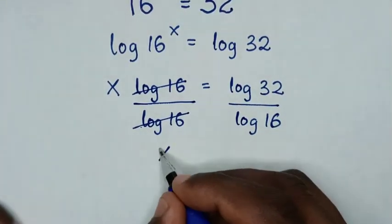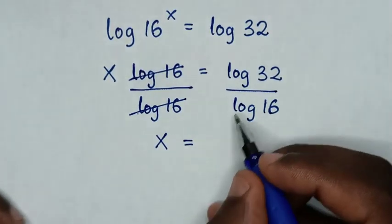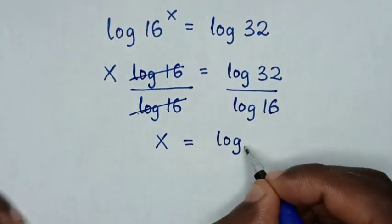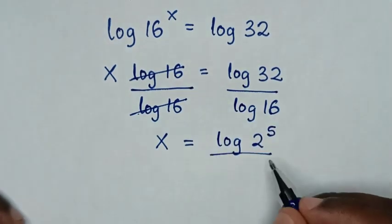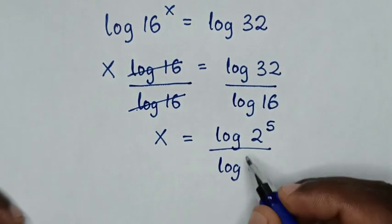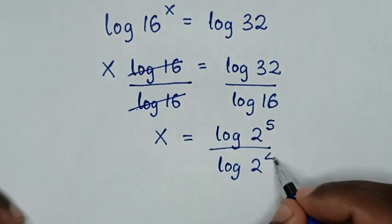Then x is equal to log of 32, which is same as 2 power 5, over log of 16, which is same as 2 power 4.